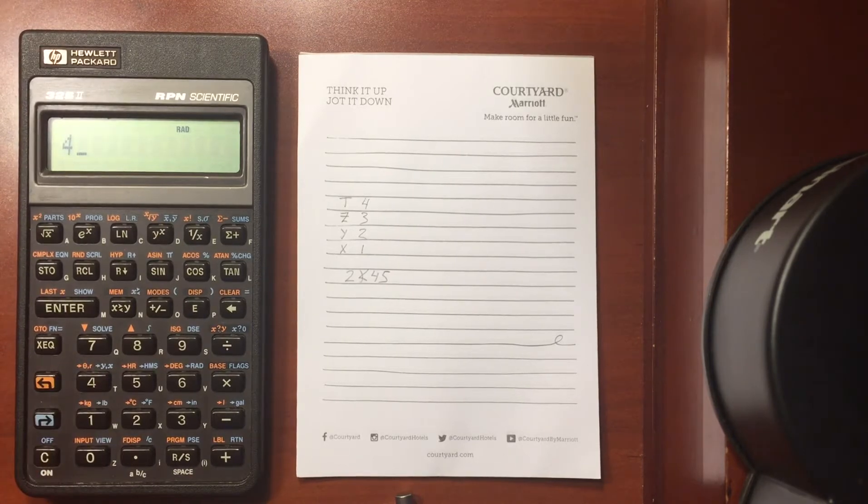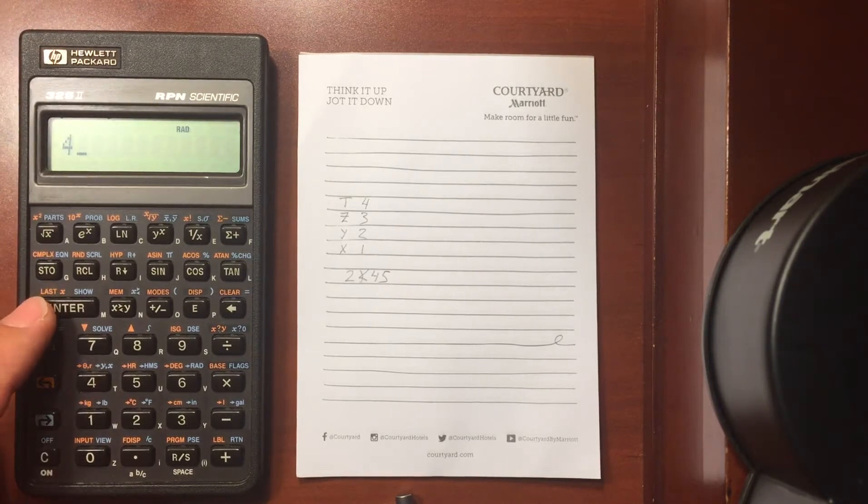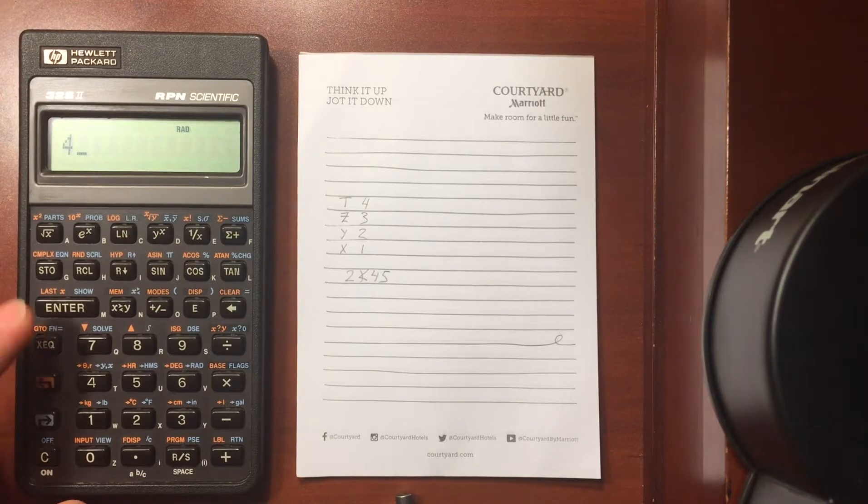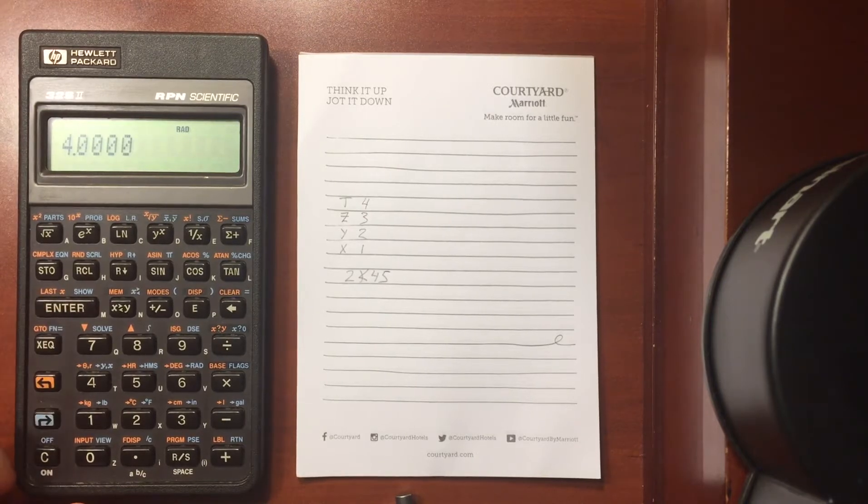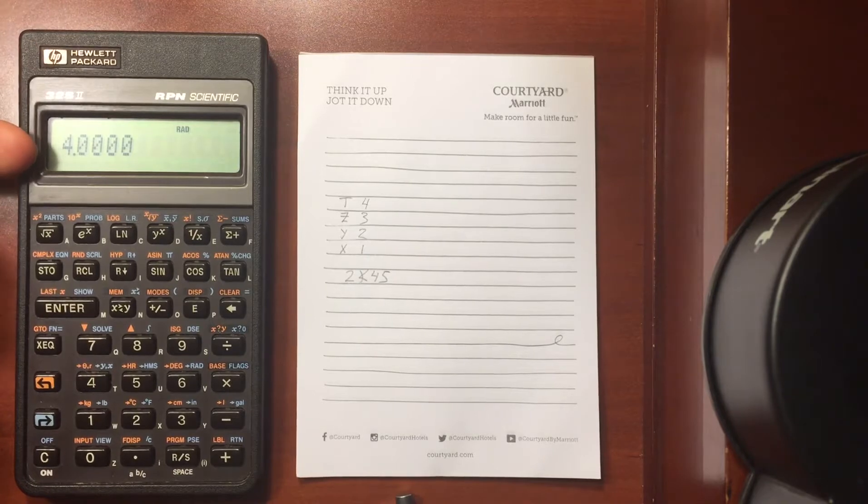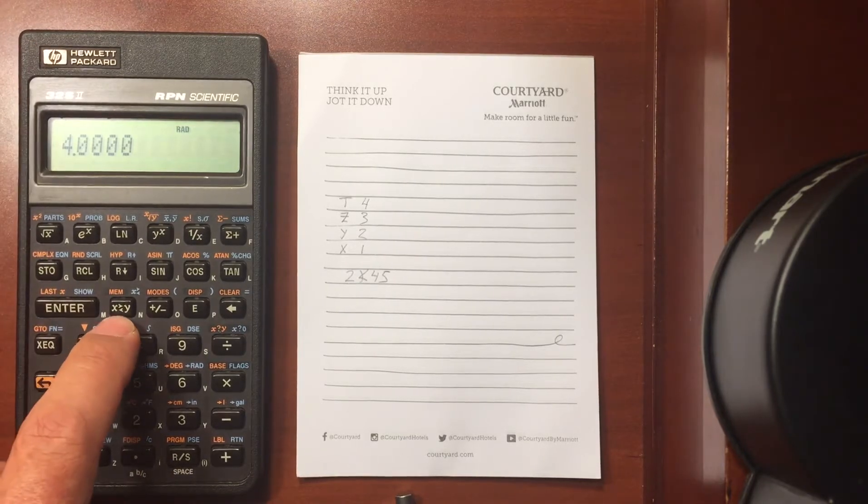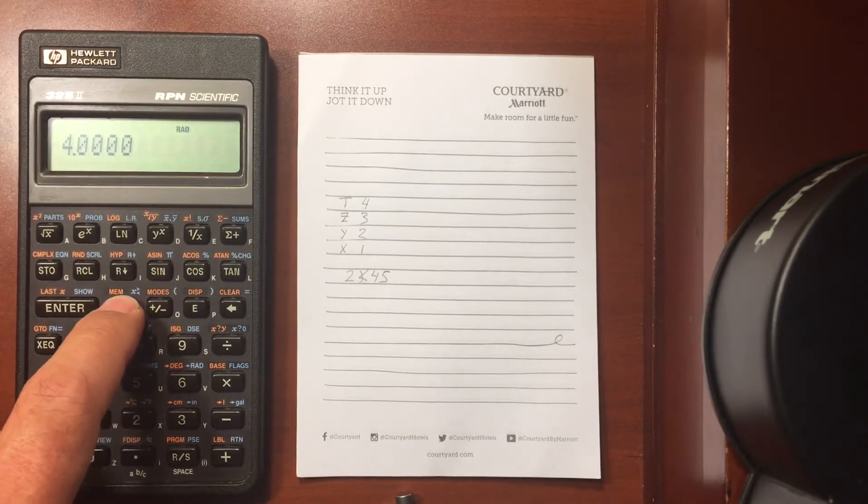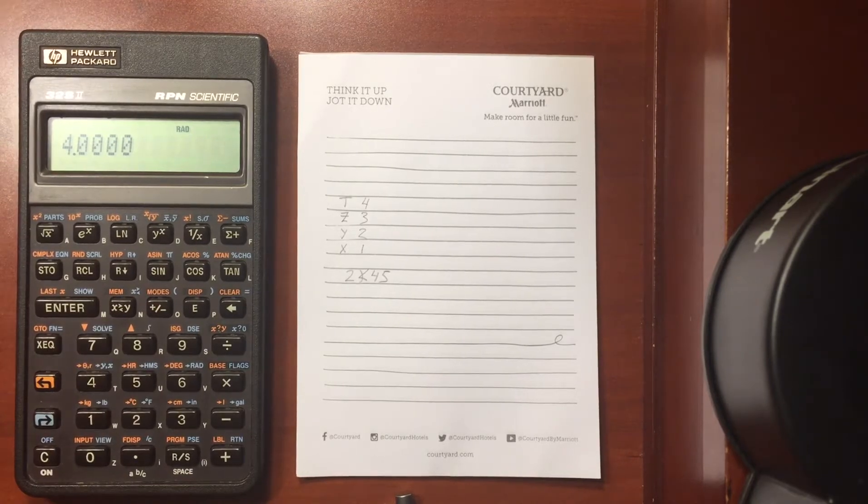First I'm going to enter in a 4, and right now that is in the X register. If I hit enter, now I have a 4 in the Y register and a 4 in the X register. I can use the X and Y swap button right here to swap in and out. That's the same number right now, so we just see a 4.